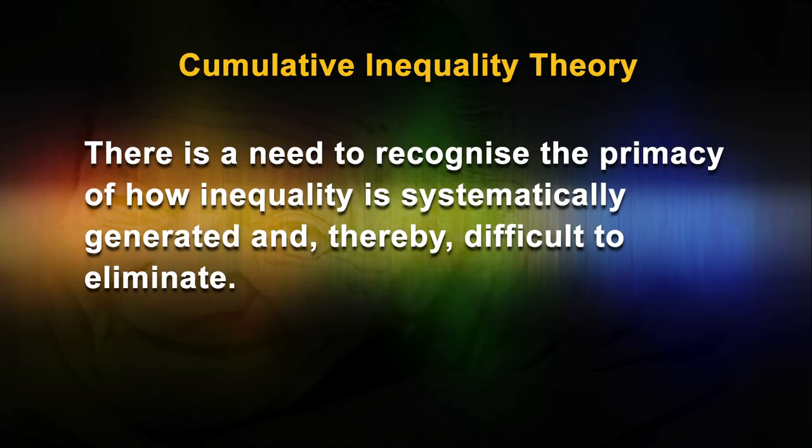Cumulative Inequality Theory: Inequality is present in all societies, with some persons having more resources, opportunities, and influence than others. Although some viewpoints regard inequality as the result largely of personal action and human agency, we conceptualize the major antecedents of inequality as systematically structured. People make choices that influence inequality, but the choices available throughout the world are quite varied, signifying that human agency is always constrained by the opportunities structured by social institutions and culture. There is a need to recognize the primacy of how inequality is systematically generated and thereby difficult to eliminate.